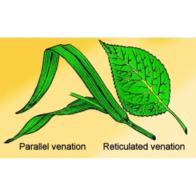In reticulate venation, the veins and veinlets are irregularly distributed over the entire lamina, causing a network pattern. This type is known as reticulate venation — the word reticulate means net-like. Plants such as guava and mango have reticulate venation, whereas banana leaves have parallel venation.